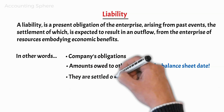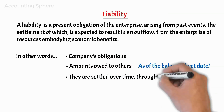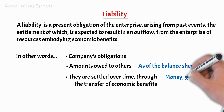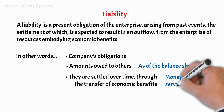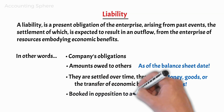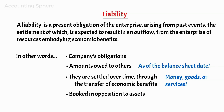They are settled over time through the transfer of economic benefits, including money, goods, or services. On the balance sheet, companies book liabilities in opposition to assets, and they book it as credits. The balance sheet reports a company's liabilities as of the date noted in the heading of the balance sheet.